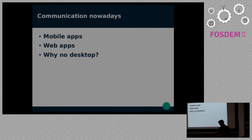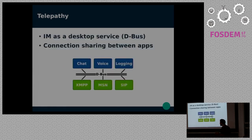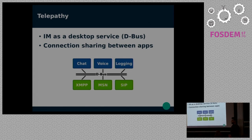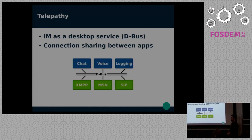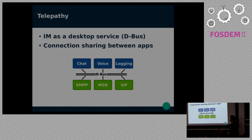I was looking at Telepathy again and thought, why is this project dying? Maybe you've heard of it before. It's basically a framework implementing instant messaging as a desktop service. Every protocol backend is a different process, and all communication with user interfaces is done through D-Bus. You can have more than one user interface sharing the same connection because of this architecture.